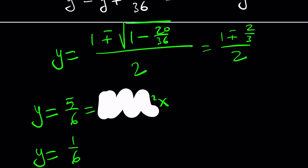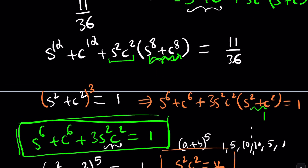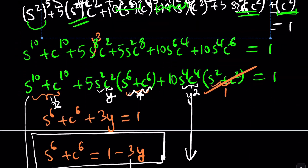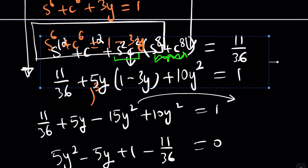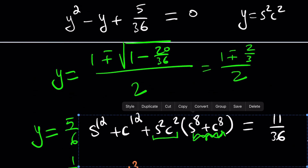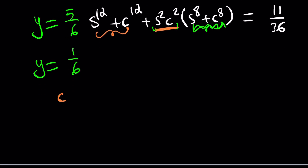Now we still need the sum of the 8th powers to complete our formula for the 12th powers. So let's raise s squared plus c squared to the fourth power. The binomial coefficients are 1, 4, 6, 4, 1. Expanding gives: s to the eighth plus c to the eighth, plus 4 s to the sixth c squared plus 4 s squared c to the sixth, plus 6 s to the fourth c to the fourth, all equal to 1.